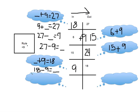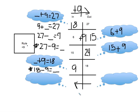So we found a pattern. When you go with the rule — when I go from in to out — I was adding 9, and everything was easy. When I was going backwards though, I actually went the opposite way of the rule. So when I go from in to out following the rule, I follow plus 9. But when I go backwards, I go the opposite of my rule, which is minus 9.